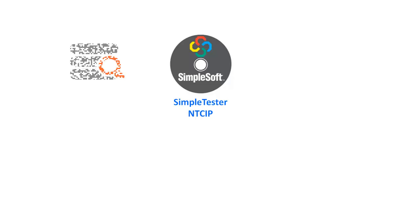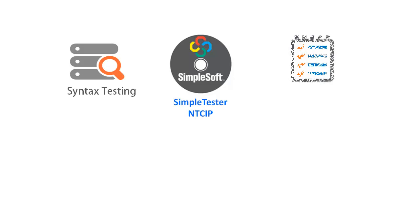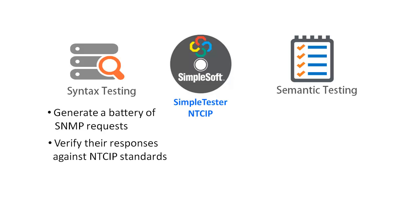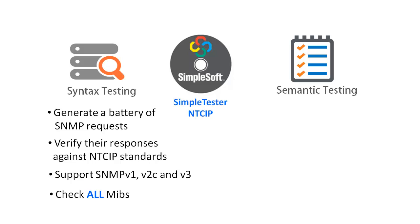SimpleTester includes hundreds of syntax and semantic tests that are ready to use. Syntax test suites generate a battery of SNMP GET, GET NEXT, and SET requests for each and every variable and table supported by the agent, and verify that the agent responses comply with the SNMP protocol specifications. All three versions of the SNMP protocol — SNMP v1, SNMP v2c, and SNMP v3 — are supported. The syntax tests check all the MIBs supported by the agent, including private MIBs.